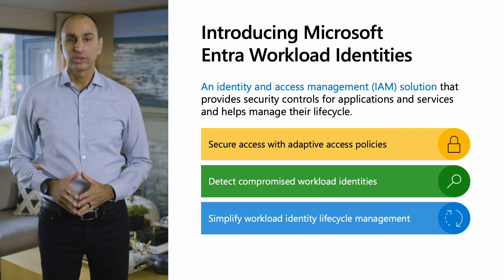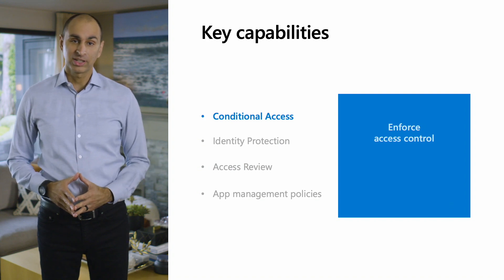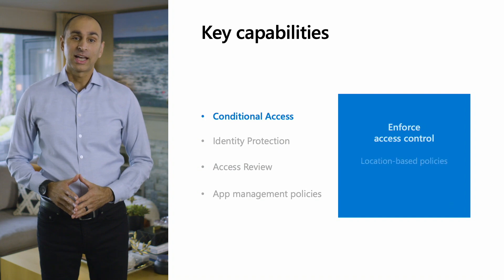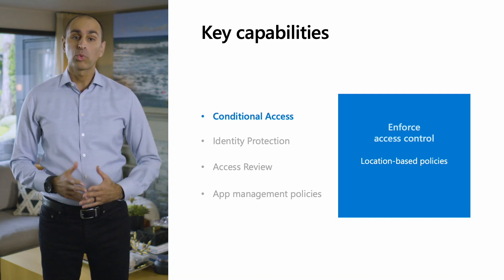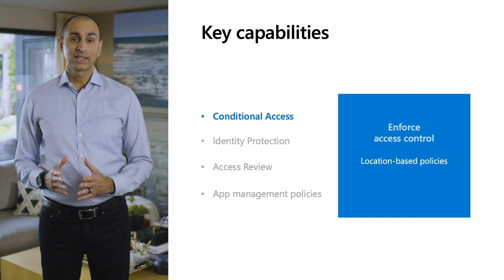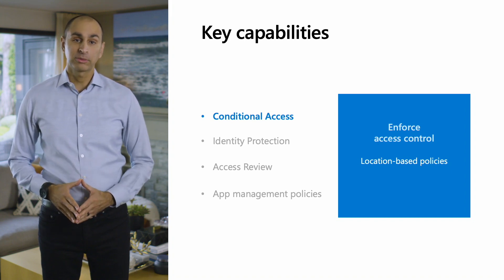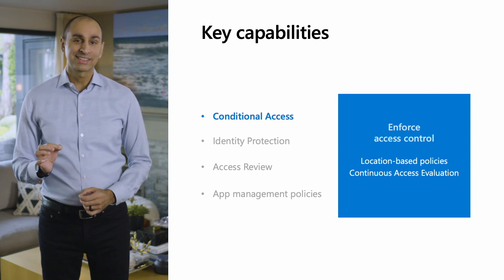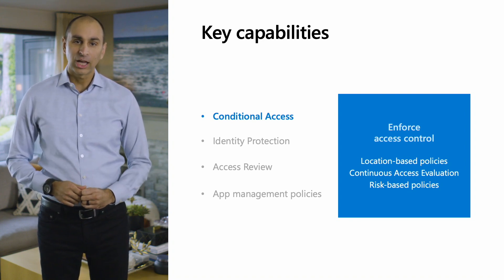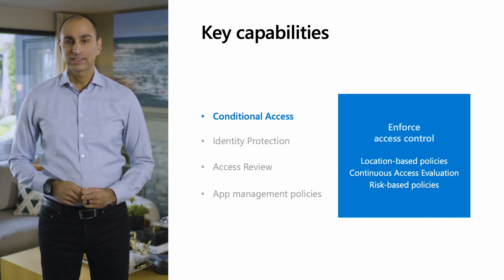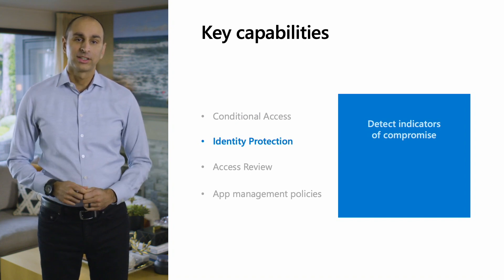With Entra Workload Identities you can detect risk of compromise, contain potential threats, and improve your security posture for workload identities, all within the new Entra admin center. Conditional access is one of the most powerful forms of access control in the industry. Last year we announced location-based policies where you can specify a trusted location and restrict sign-in for workload identities. Now, sign-ins targeting Microsoft Graph are protected by default by continuous access evaluation, which instantly enforces those location controls.